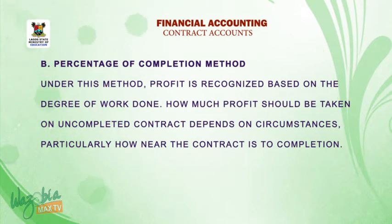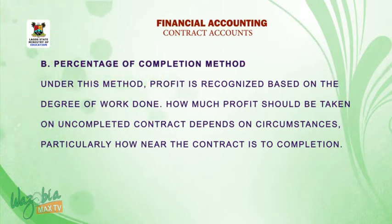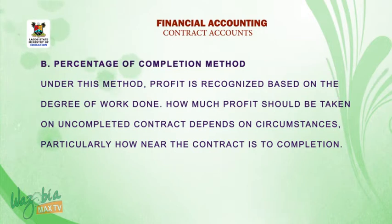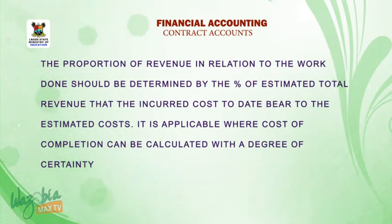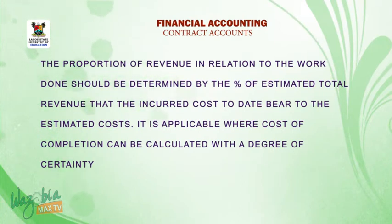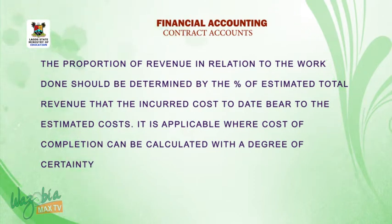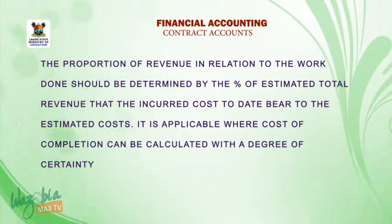B. Percentage of completion method. Under this method, profit is recognized based on the degree of work done. How much profit should be taken on uncompleted contracts depends on circumstances, particularly how near the contract is to completion. The proportion of revenue in relation to the work done should be determined by the percentage of estimated total revenue that the incurred cost to date bears to the estimated cost. It is applicable where the cost of completion can be calculated with a degree of certainty.